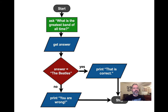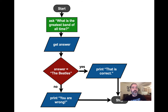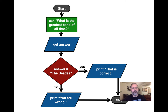You probably make if-statements all the time in real life. Here we have a simple program flowchart that asks 'What's the greatest band of all time?' It gets an answer from the user. Then you see a diamond shape — diamond shapes in classical flowcharting methods indicate a branch. If the answer is 'the Beatles,' yes or no? If yes, print 'that is correct.' If no, print 'you are wrong.' You can see how it creates a fork in the road — one path or another based on a comparison.